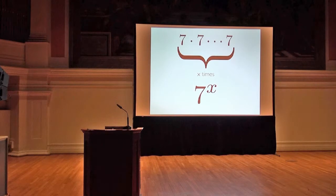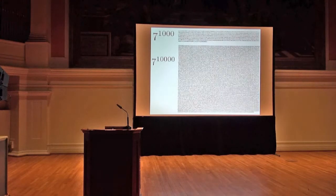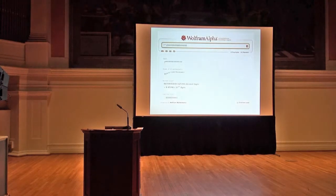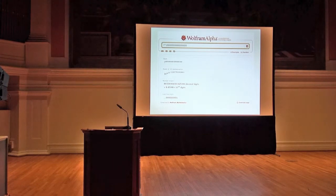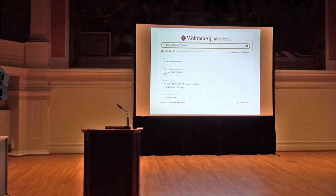We have a nice notation for this type of problem: 7 to the x, which means multiply 7 by itself x times. It's a very simple, elegant problem, and in fact remarkably easy to compute. So for example, this morning I did 7 to the 1,000, 7 to the 10,000, and in fact Wolfram can handle numbers that are arbitrarily big like this. Computing 7 to some power is very easy — going this direction is very easy.